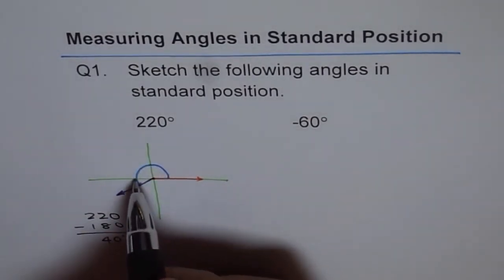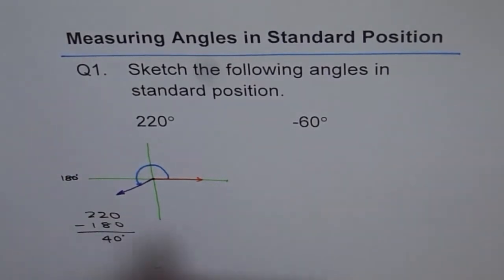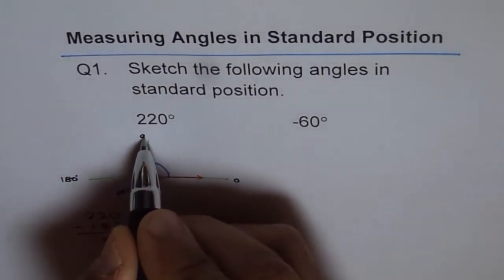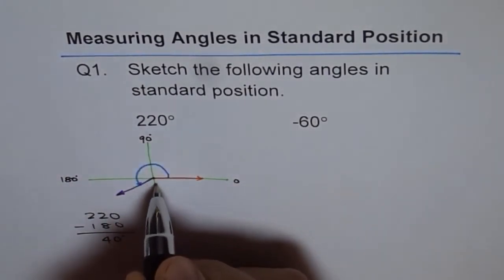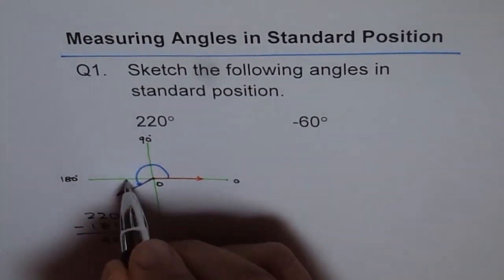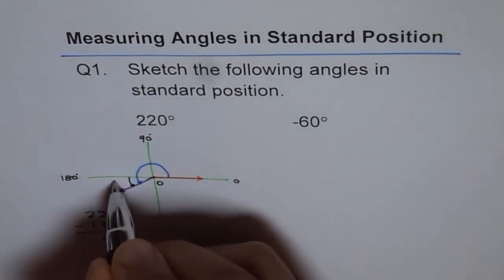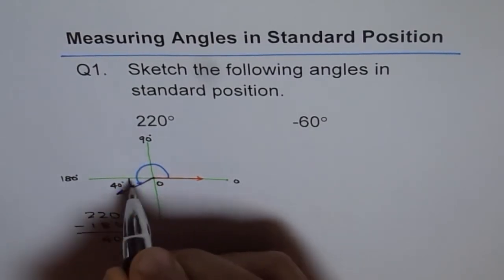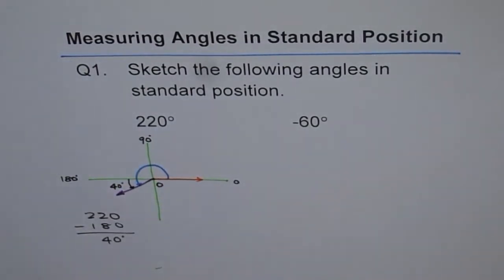From here to here it is 180 degrees. From here to here it is 180 degrees. This is 0, this is 90 degrees, and that's the origin O. 40 more. So from here we say it is 40. So 180 plus 40 is 220 degrees.